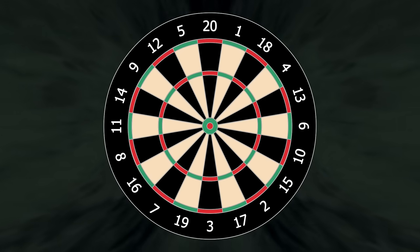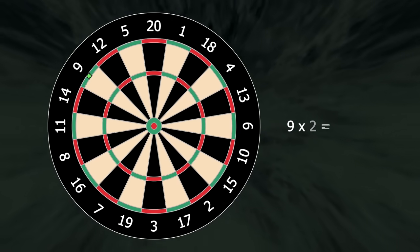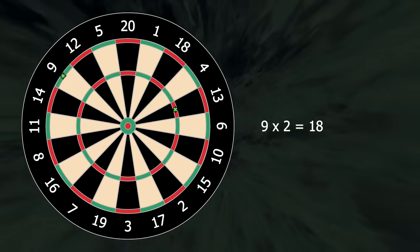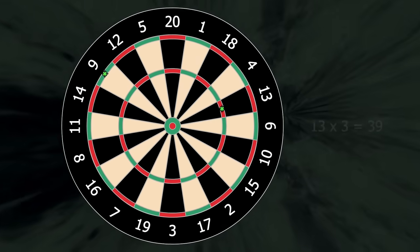This outer ring means you double your number. So if your dart lands in double 9, it's 2 times 9, 18. The middle ring is the treble ring. So treble 13 is 13 times 3, 39.